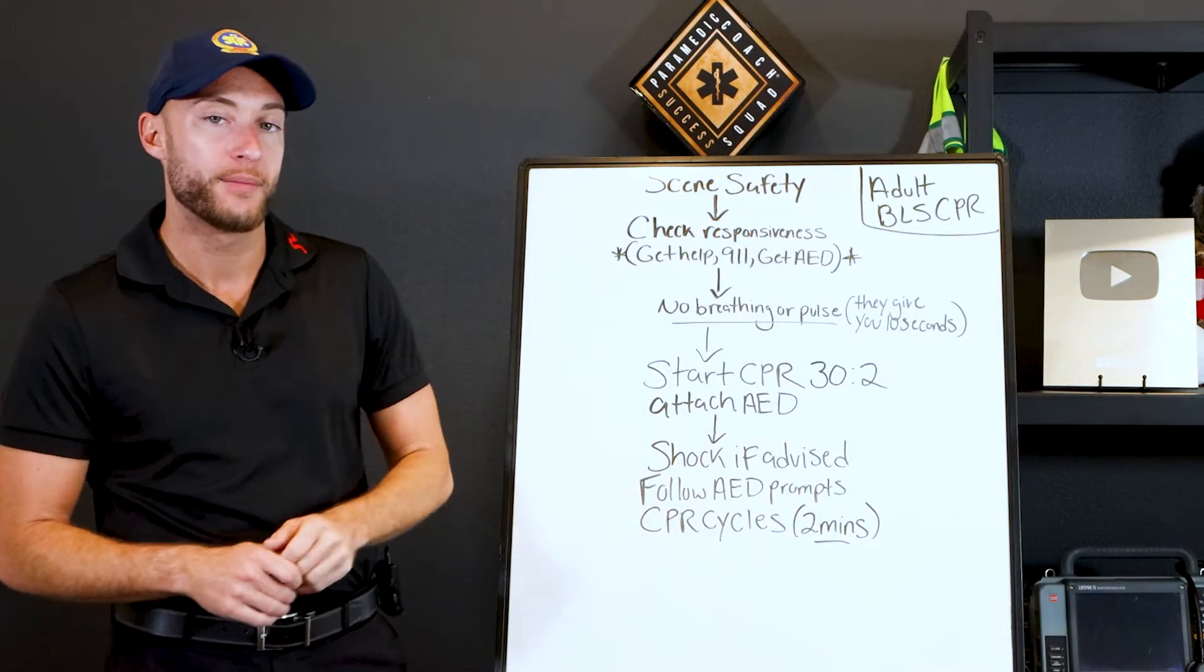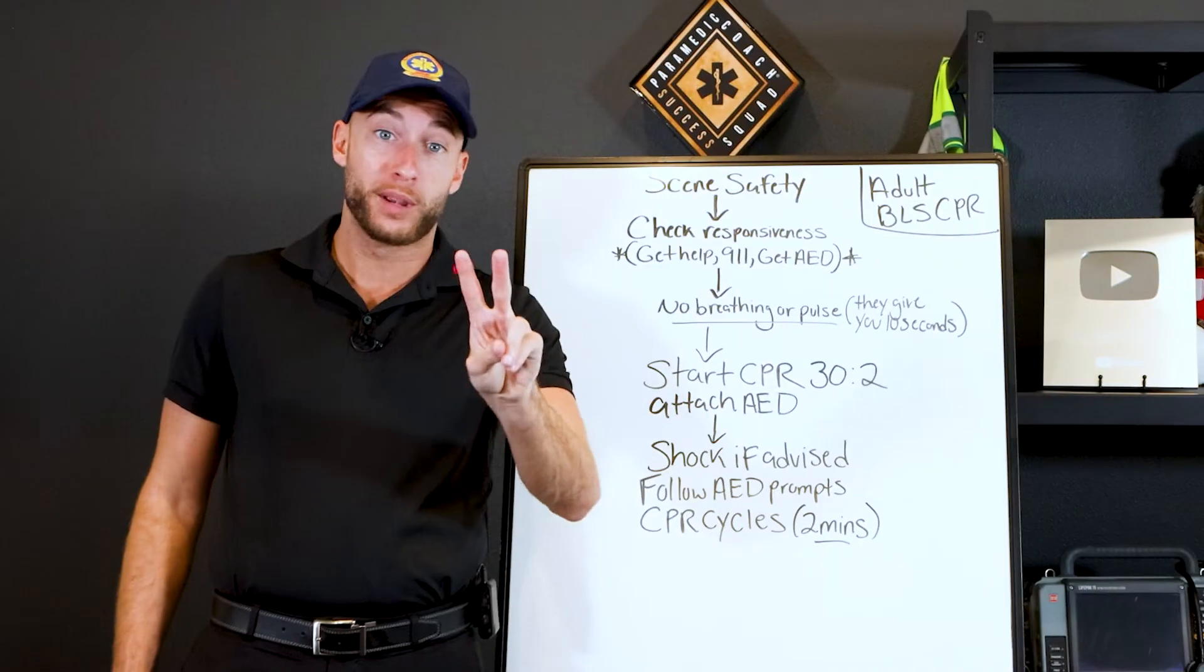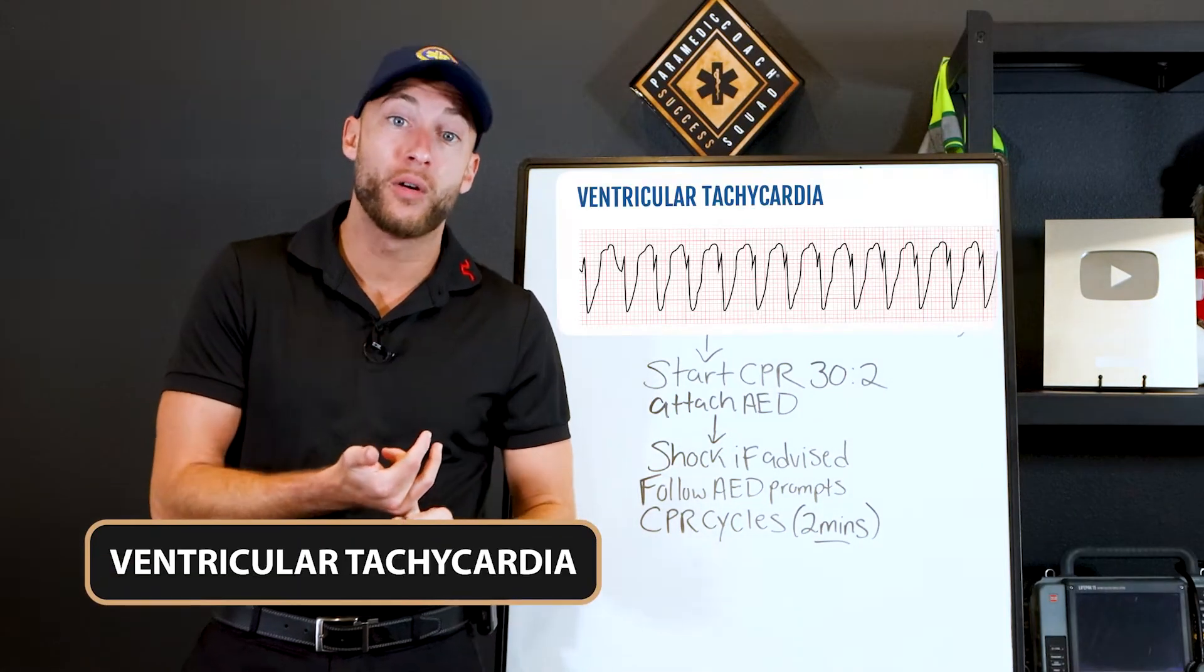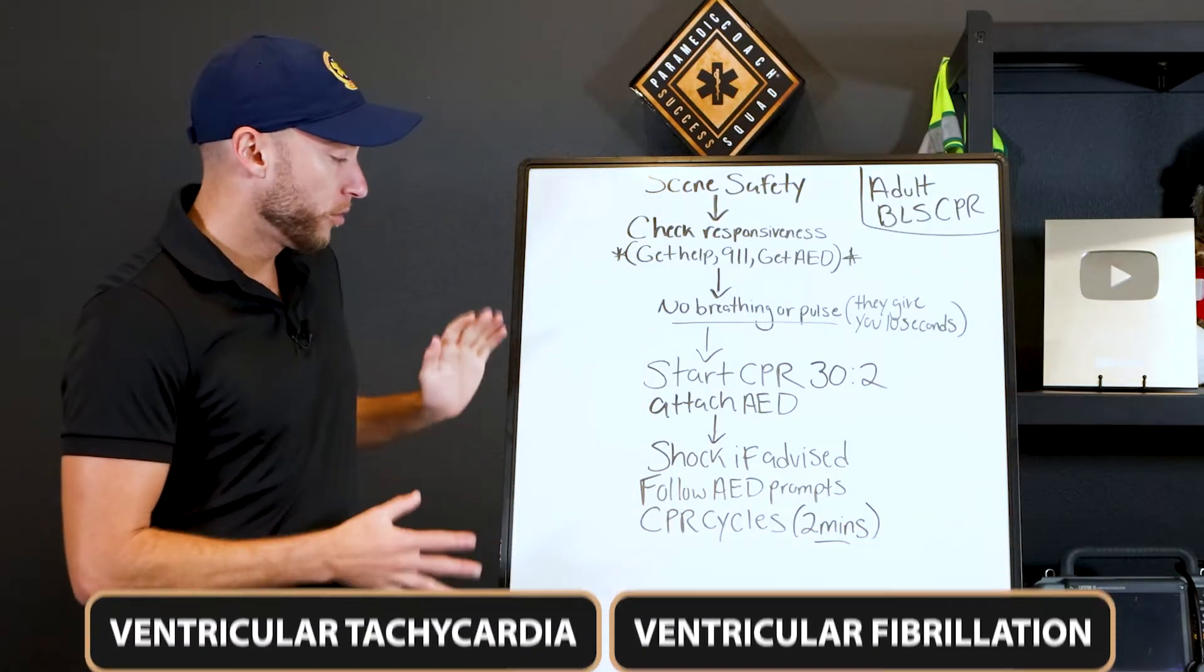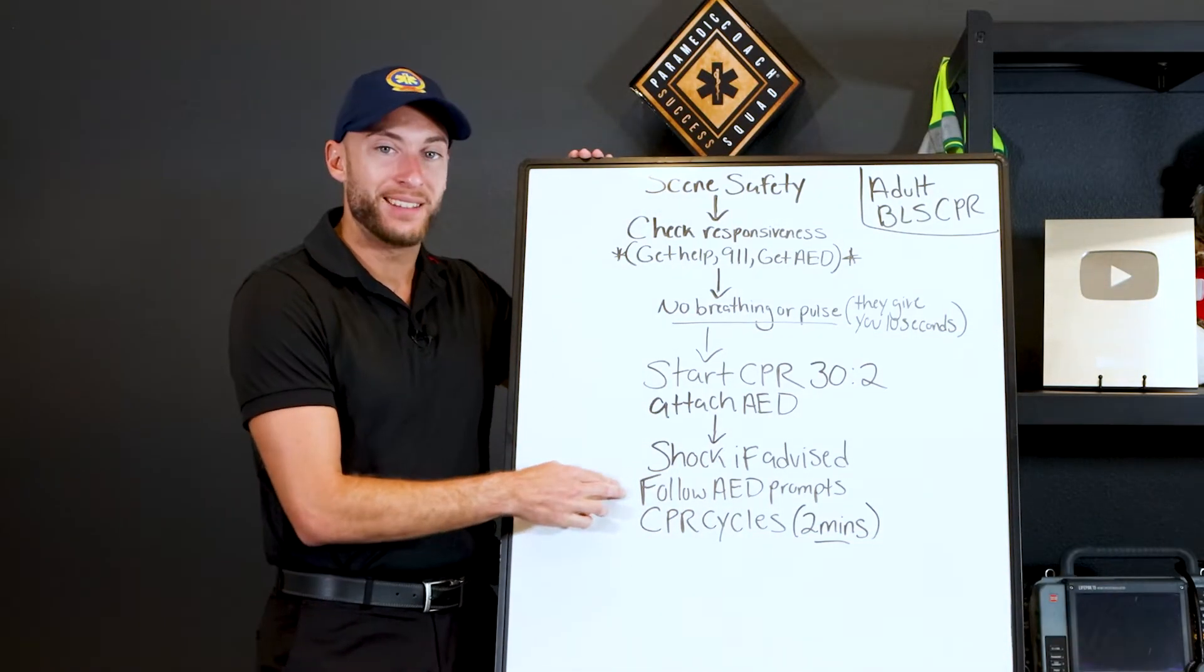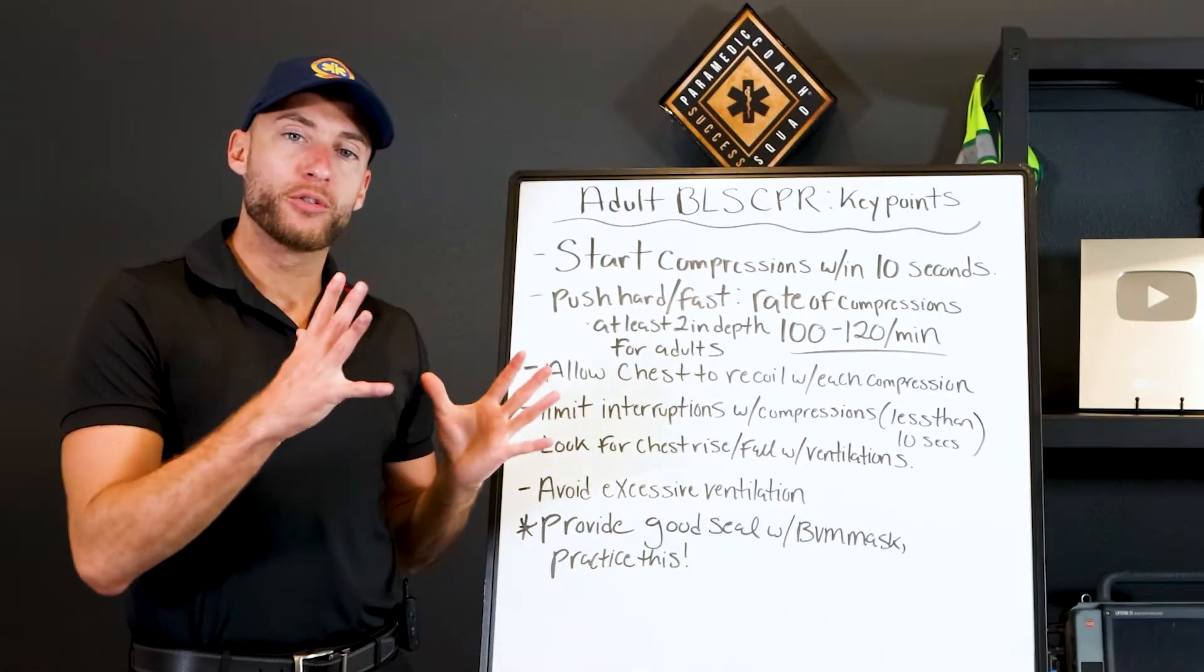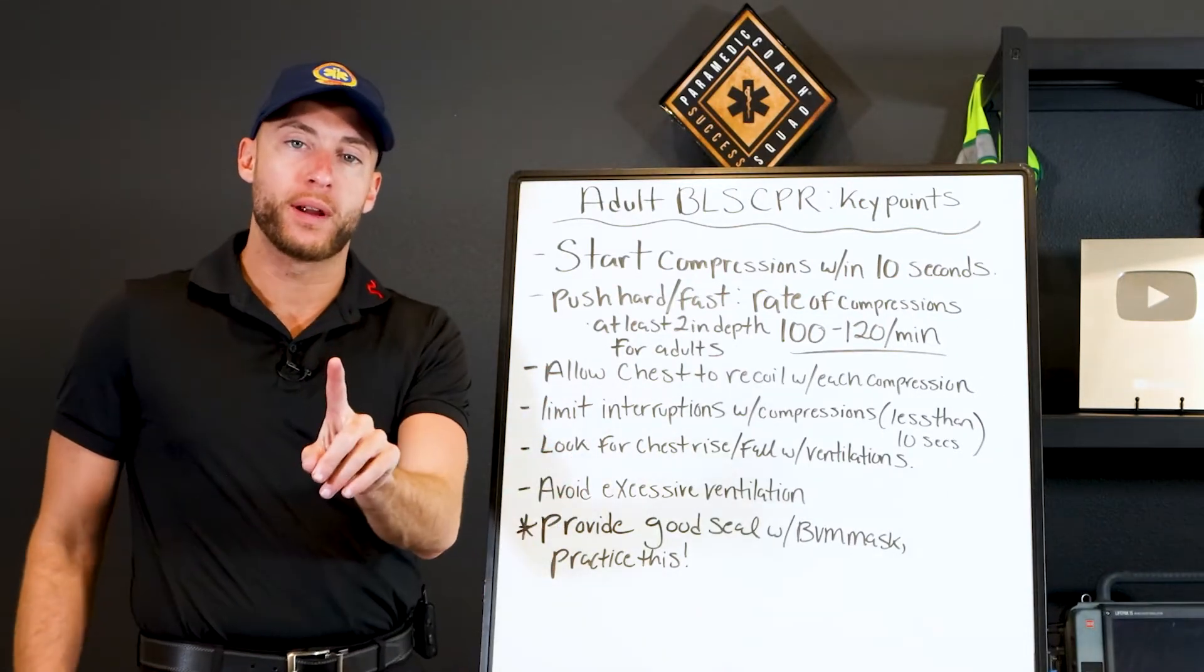So you can kind of tell what camp you're in, what type of rhythm you're in by if we shock or not. If we shock and we're in cardiac arrest, there's only 2 rhythms we can be in: ventricular tachycardia and ventricular fibrillation. So a little back story there about the AED and its shocks.